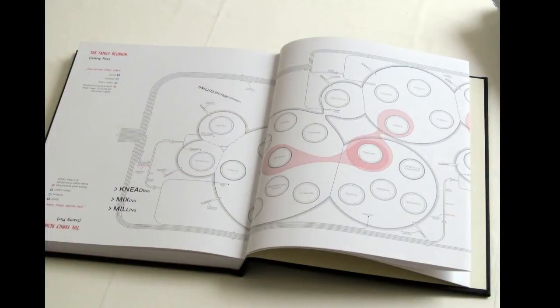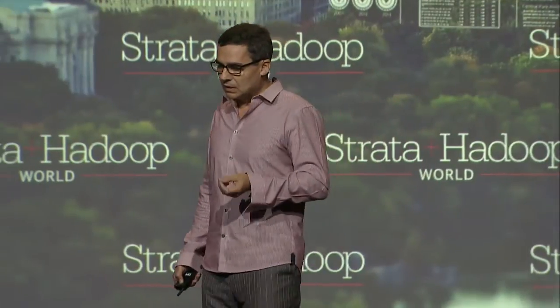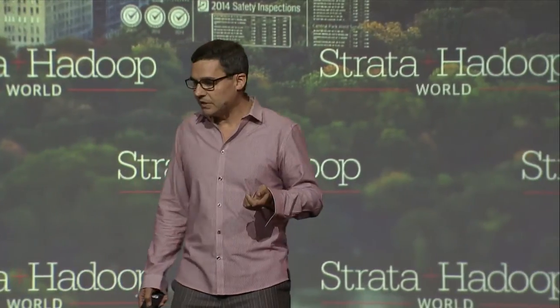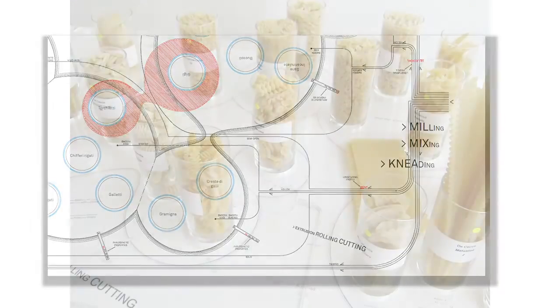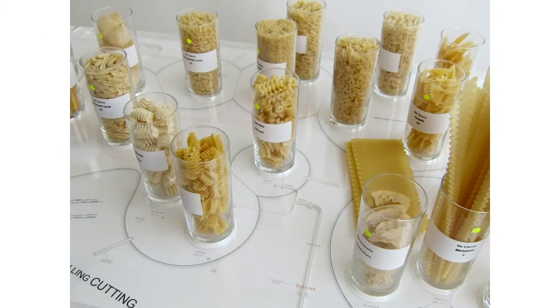The book concludes with a network graph in which I reshuffled the pasta family tree into a richer information map — think of it as the seating plan of a pasta family reunion or a big Italian wedding. The idea is to connect shapes across types to reveal unforeseen formal affinities. We even made a physical version of this diagram in which those newly uncovered relationships were laser engraved on sheets of acrylic.